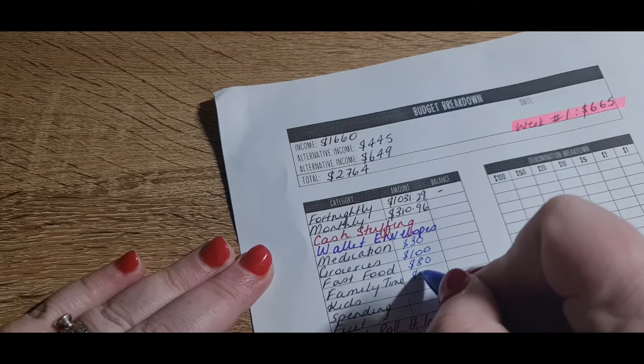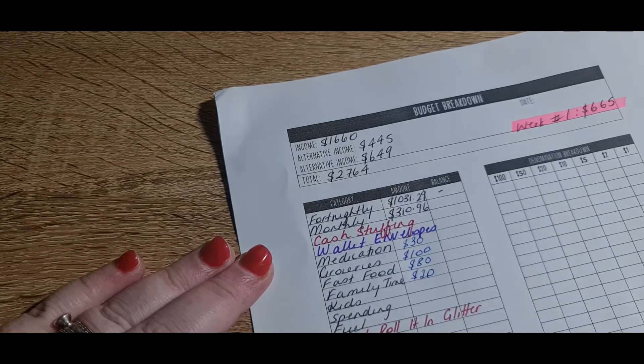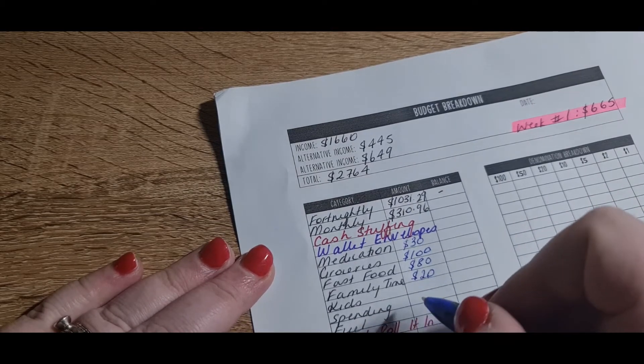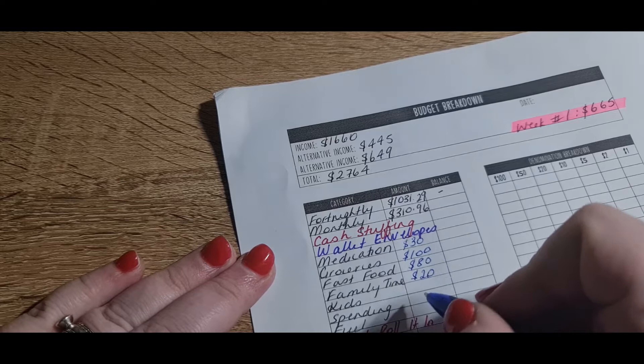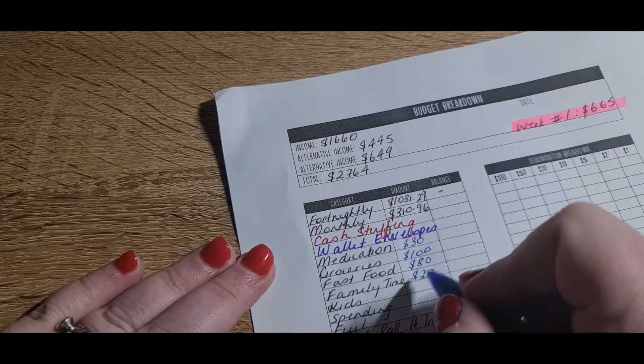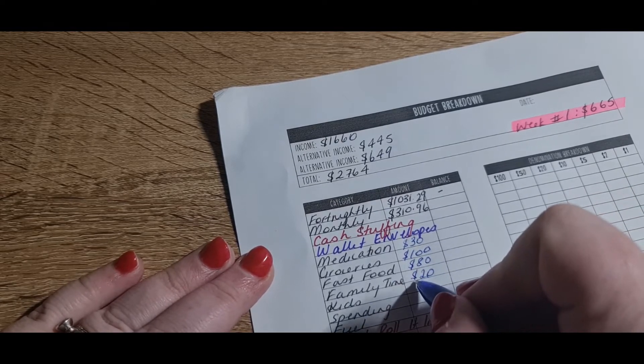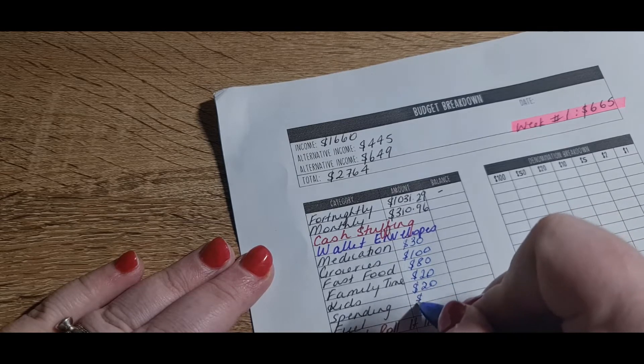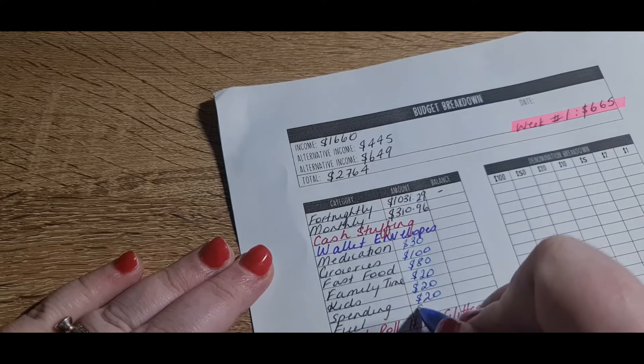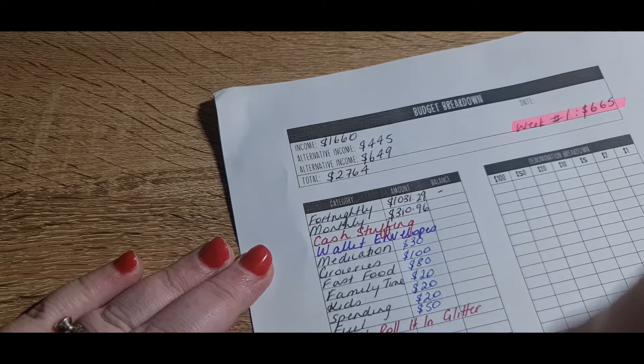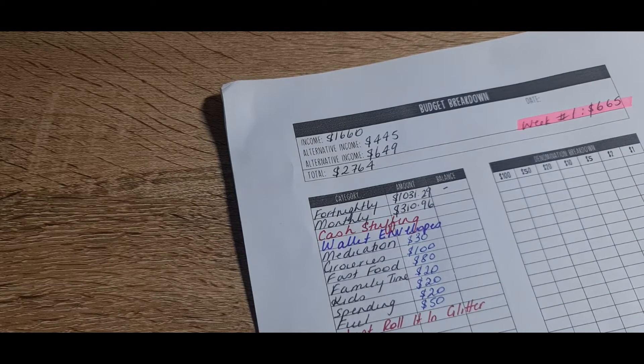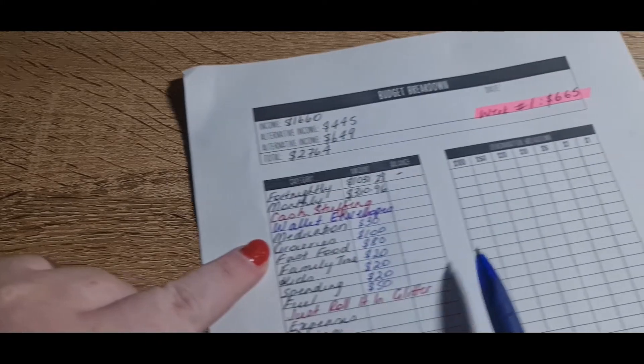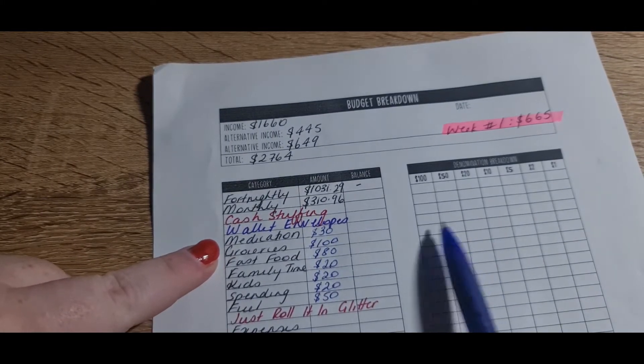Groceries gets its standard $100, and fast food gets its standard $80. Family time gets $20. We often, once a fortnight, we'll go to the park, feed the ducks, and then go and get an ice cream. The kids always gets $20, and I get $20 spending money. And we now increased our fuel to $50 because fuel prices are getting a bit nuts.